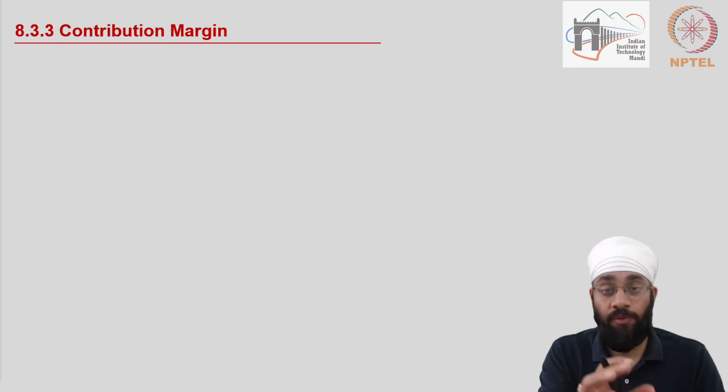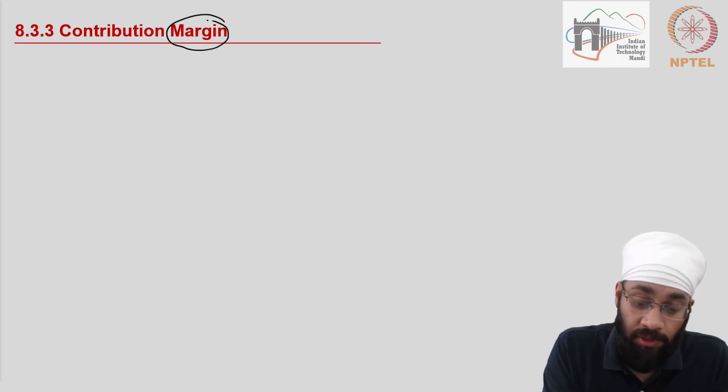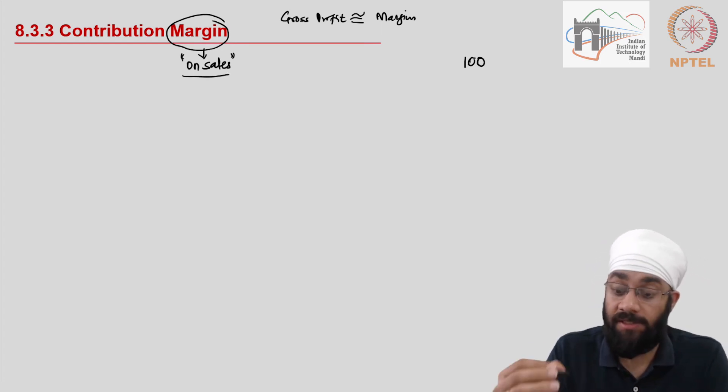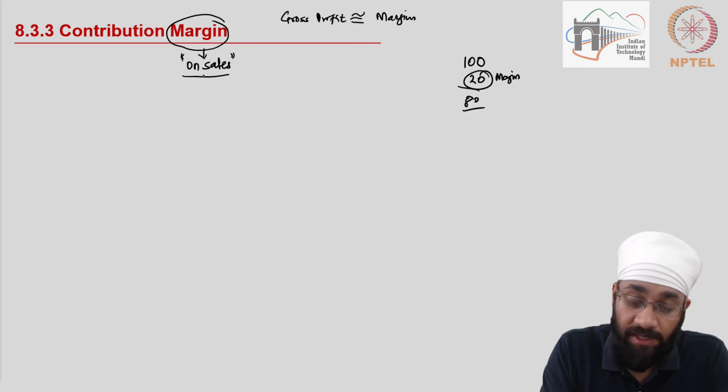Let us now go on to the main concept, contribution margin. What is contribution margin? You are not new to the term called margin. Earlier we have discussed gross profit, which we said is also called the margin. So gross margin, net margin - the point that I am trying to drive home is that the margin is always on sales. Whenever we say this is my margin, that means 100 rupees is the price of the product, and on that I am making 20. So 80 rupees is my cost, so this is the margin. Basically, as percentage of sales.